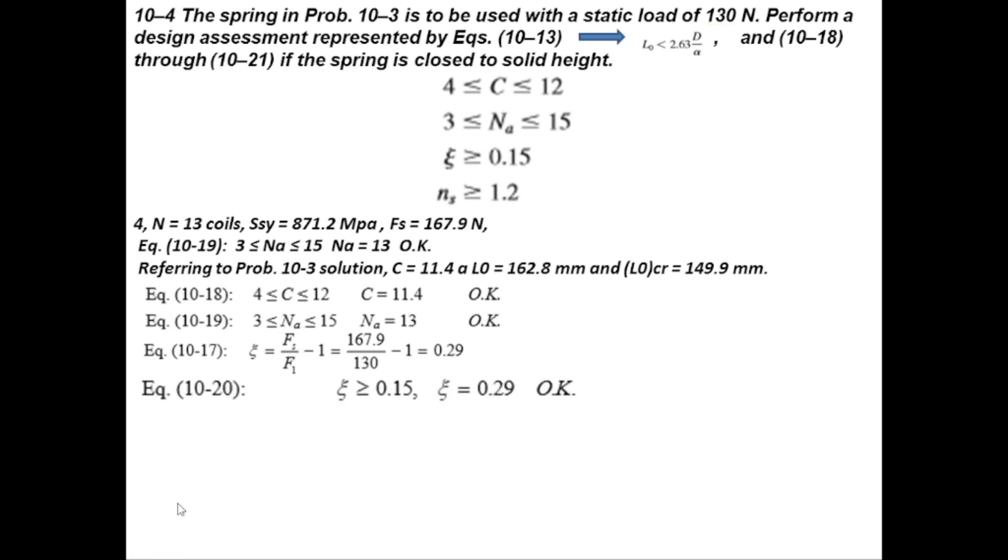Now let's find out the shear stress produced in the spring due to the static load of 130 N. We use this equation, which we already derived in the theory lecture. In problem 10.3, Kb value was 1.117, F is 130 N, spring mean diameter was 28.5 mm, and wire diameter was 2.5 mm. Putting all these values, we get 674 MPa shear stress.